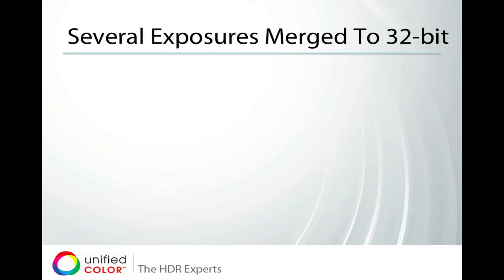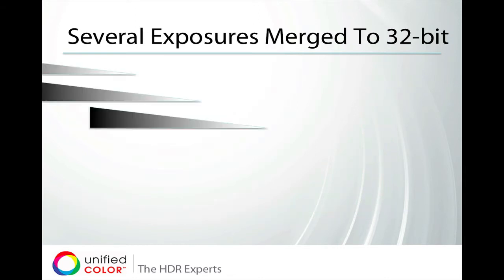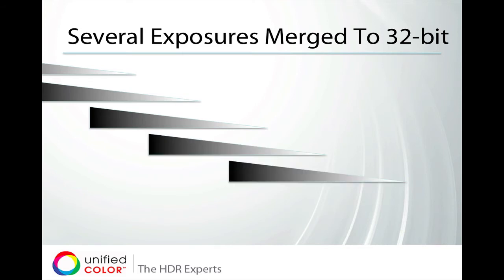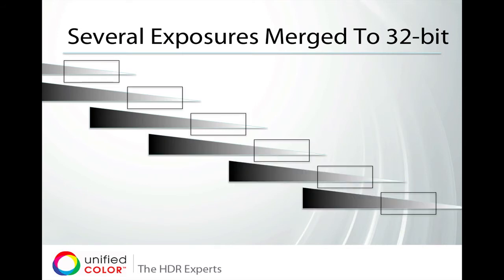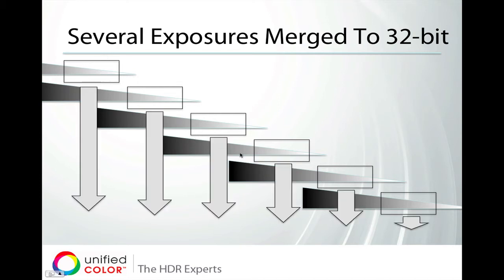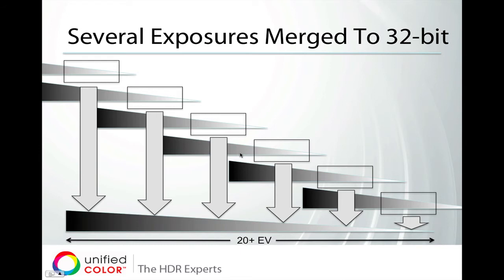So I'm going to use several exposures, and typically you'll expose at one or two F-stop increments. When I have all of those, we merge them into an HDR scene — we take the sweet spot out of each one of these exposures and merge them into one 32-bit high dynamic range image.